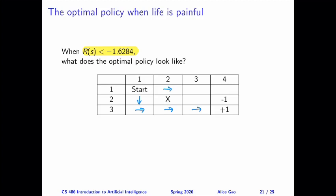And then when it's on the path above X, actually the nearest exit is minus one, not plus one. So in this case, the agent is going to do the somewhat suicidal move to go right and then go down. This is the fastest way to the minus one exit.